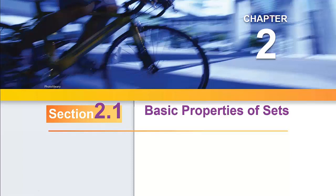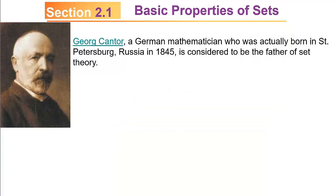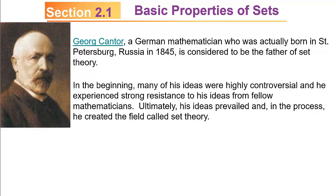Today we'll begin our study of Chapter 2 by talking about the basic properties of sets. Georg Cantor, a German mathematician who was actually born in St. Petersburg, Russia in 1845, is considered to be the father of set theory. In the beginning, many of his ideas were highly controversial, and he experienced strong resistance from fellow mathematicians. Ultimately, his ideas prevailed, and in the process he created the field called set theory.